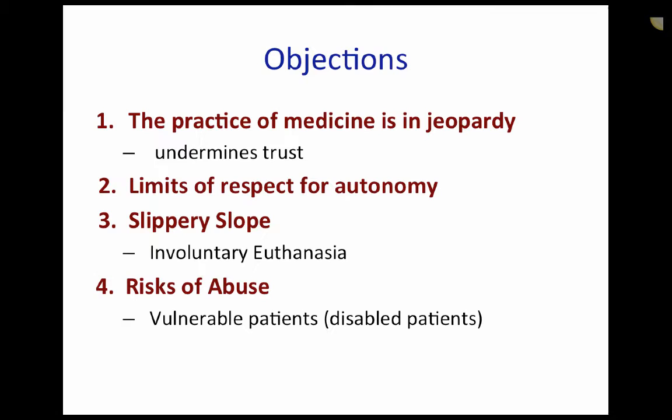However, there are several objections that could be raised against active euthanasia. First, the practice of medicine would be in jeopardy as a moral profession — one cannot have doctors as killers as well as healers, as it will undermine trust. Second, there are limits to respecting autonomy; we do draw the line in other cases, for example, refusing to provide elective amputation for persons suffering from so-called bodily integrity identity disorder. Third, allowing active euthanasia may pave a slippery slope to involuntary euthanasia, where euthanasia is performed on incompetent patients. Finally, there may be a risk of abuse for vulnerable patients, such as disabled patients, who might be persuaded or manipulated into believing that there is a duty to die.